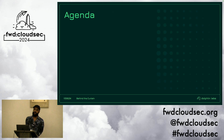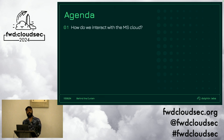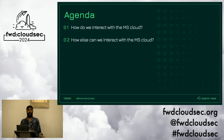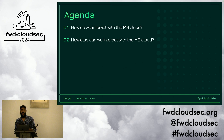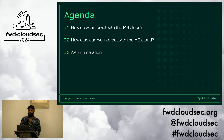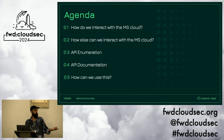So how are we going to cover this? A quick agenda: we'll go through how we interact with the Microsoft Graph and what the supported documented methods are, then how else we can interact with the Microsoft Cloud — what other interfaces are exposed. We'll go through approaches and challenges around API enumeration and documentation, and finally how we can use this information and how it can help us.